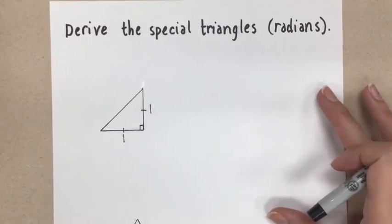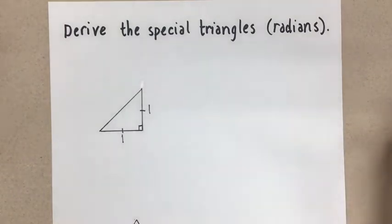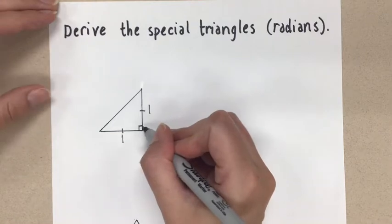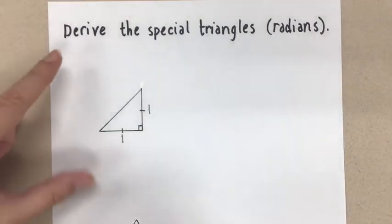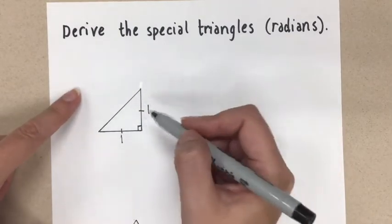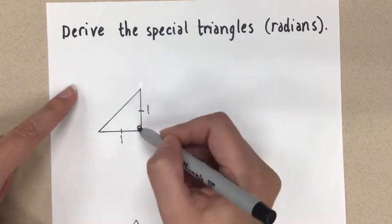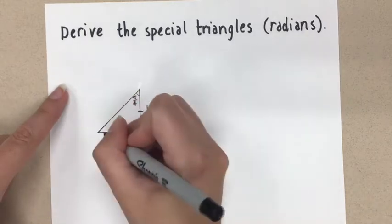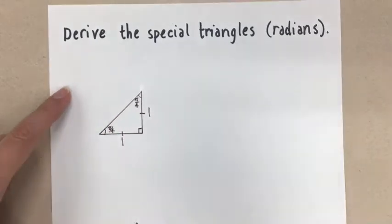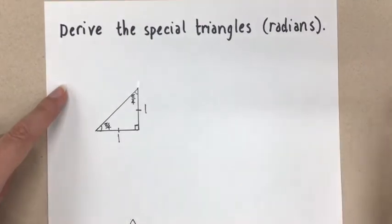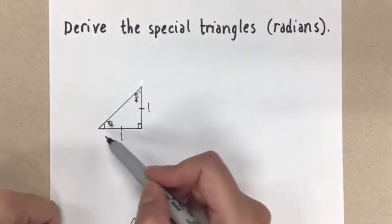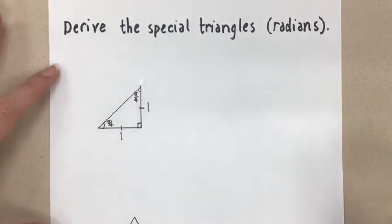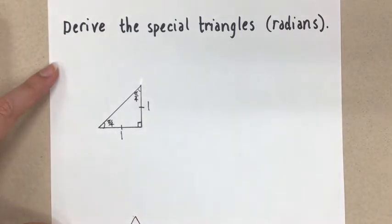I'm going to do the first one with you, and we're going to start off with a right angle isosceles triangle. If we have a right angle isosceles triangle, these two sides are equal. Then this angle here is pi over 2, and these two angles must be equal to each other — so they're going to be half of pi over 2, because we know that the interior angles of a triangle have to add up to pi radians. So that means they're both going to be pi over 4. I have named the side lengths of my triangle 1 and 1, because we always want to choose the easiest numbers possible when we're trying to derive something.